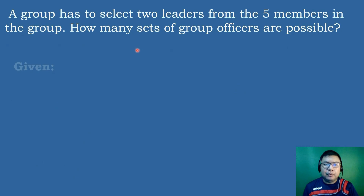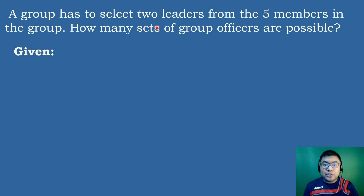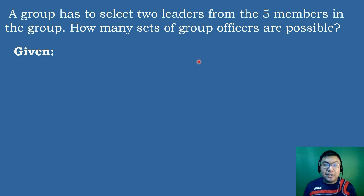Our second example: a group has to select 2 leaders from 5 members. How many sets of group officers are possible? This problem looks at sets of group officers and is not particular as to who is the moderator or secretary. We are just selecting 2 leaders, so order is not important. Person A and Person B is the same set as Person B and Person A. This is an example of combinations.